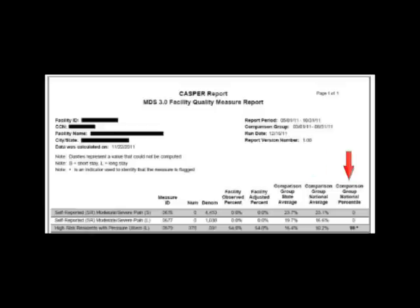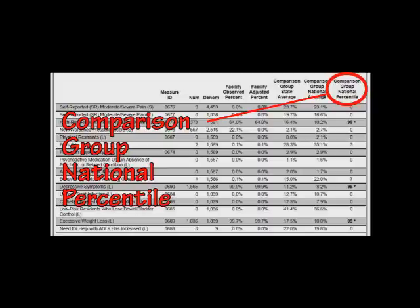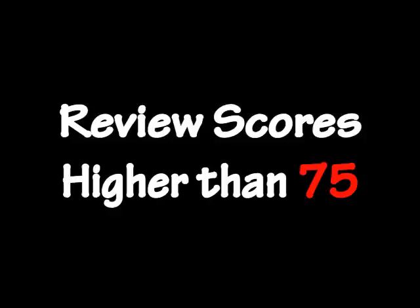It's important to pay particular attention to the last column in this report: the Comparison Group National Percentile. This column ranks your facility against all other facilities in the nation. This ranking is different because we normally think of a high score as being a good thing — but in this case, it's bad. If you have a 99%, it does not mean you received an A; it probably means your facility has a potential quality problem. Any score higher than 75 warrants review by the facility's clinical team.